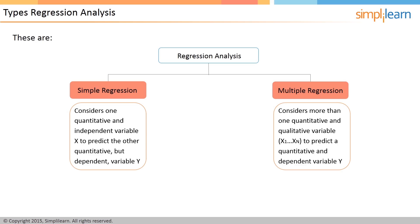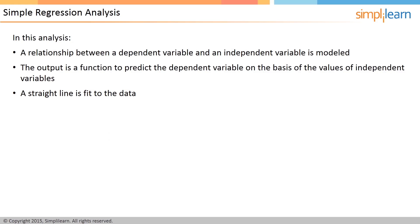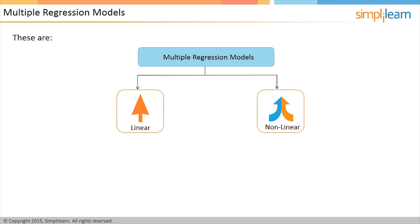In simple linear regression, the predictions of the explained variable Y, when plotted as a function of the explanatory variable X, form a straight line. The best-fitting line is called the regression line. The output of this model is a function to predict the dependent variable on the basis of the values of the independent variable. The dependent variable is continuous and the independent variable can be continuous or discrete.